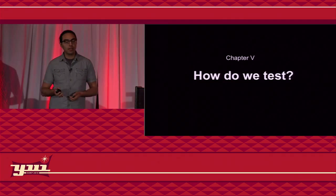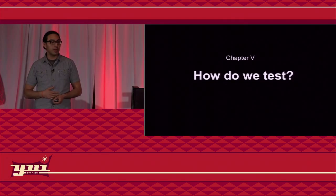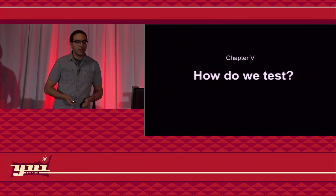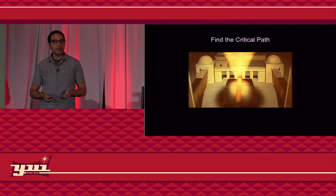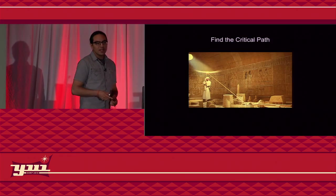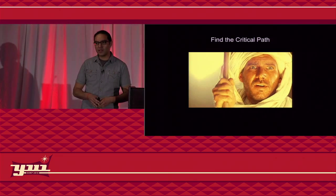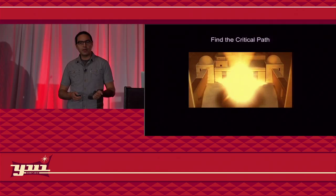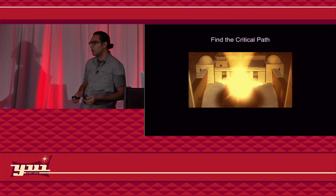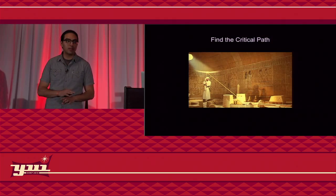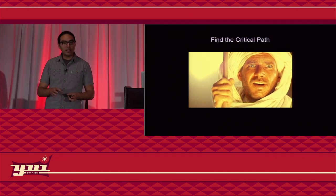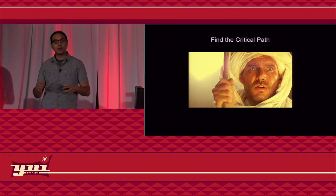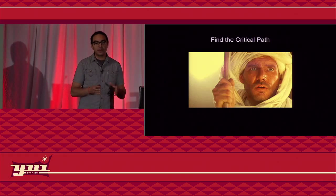So now we're getting an understanding of why we do testing and what is stopping us. But how do we start? The name of this talk is 'Forget About Everything and Start Testing.' I have two main ideas. The first one is about finding the critical path. I got this idea from a talk by Jason Huggins, the original creator of the Selenium tool. It means finding those critical components or features in your application that have to work no matter what — if one is broken, your application is completely useless.